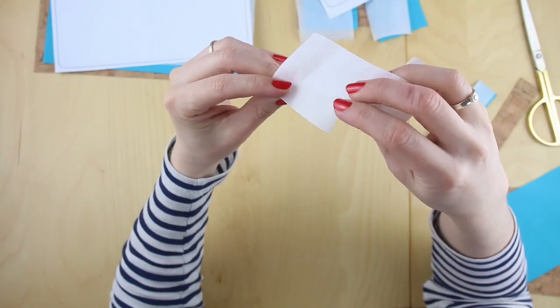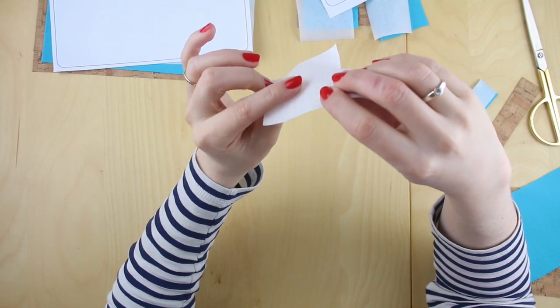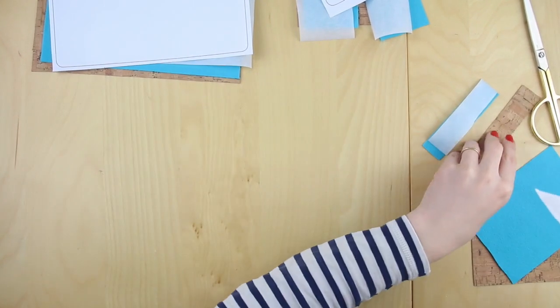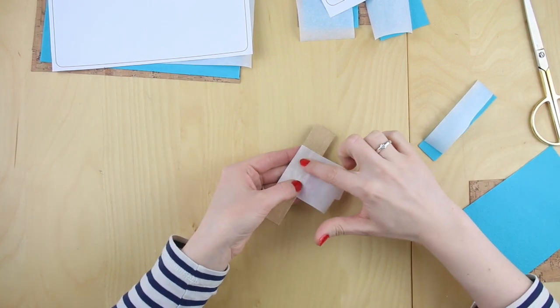Now if you have a closer look at the Bondaweb you'll see one side is shiny, the paper side, and the adhesive side is a bit rougher. So it's the adhesive side that we're first of all going to iron down onto the back of your cork fabric so that it sticks down.